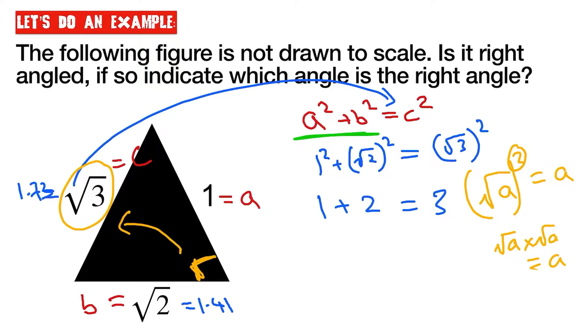But let's just finish off this question here. One plus two is equal to three, three is equal to three, which means we do in fact have a right angle triangle. And it is indicated by this side here.